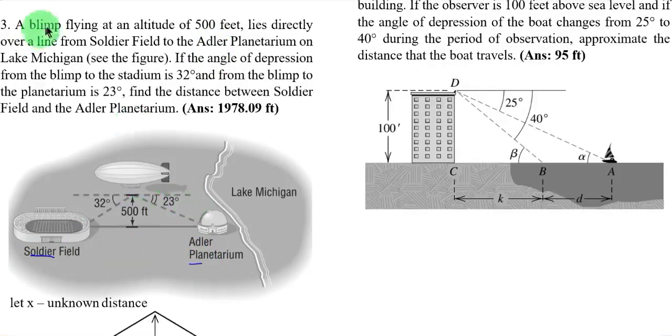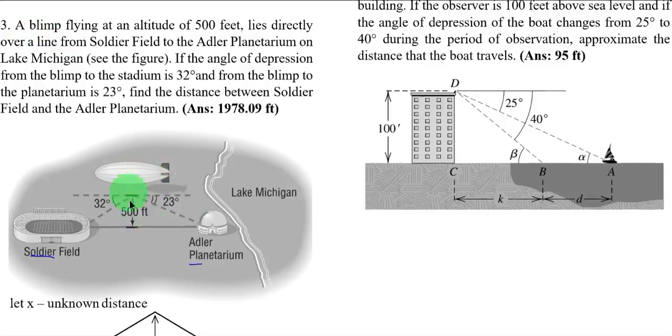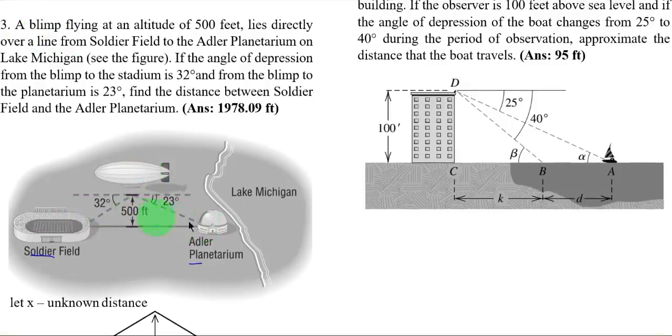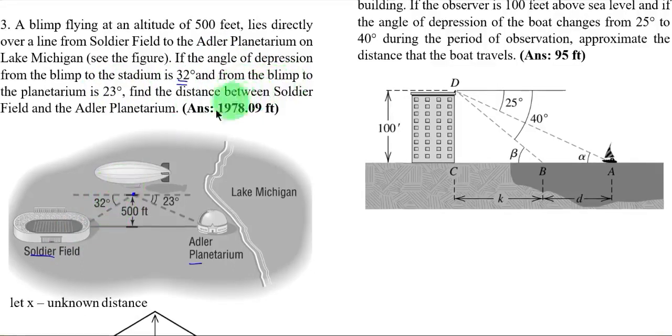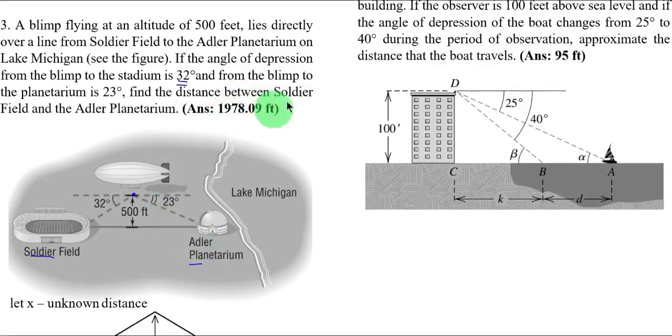So the blimp or the airship is flying over the line between the two, that is 500 feet. The angle of depression from the blimp to the stadium is 32. So this is the stadium and this is your blimp, so therefore the angle of depression is this one. And from the blimp to the planetarium is 23. So this is your angle of depression for the planetarium, 23 degrees. Find the distance between Soldier Field and the Adler Planetarium.